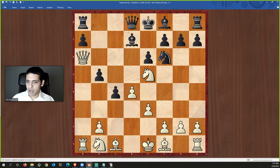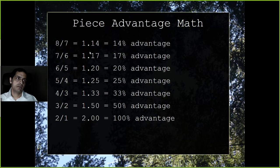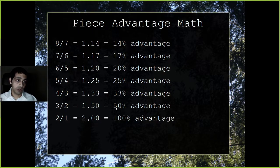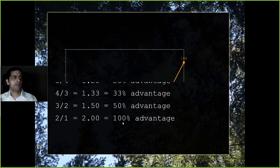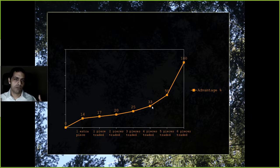Plotted on a graph, once you've traded four or five of your opponent's pieces your advantage really starts to shoot up. That's the winning technique: simply swap off your opponent's pieces, leave him down to just one king, and then you have an extra piece against his king — that's easy to win. Let me show you how I managed to do that against the computer.